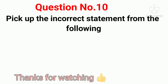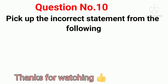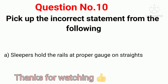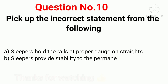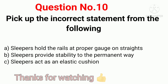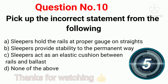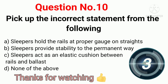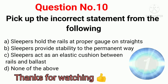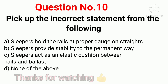Q10 (last question). Pick up the incorrect statement from the following: Option A: Sleepers hold the rail at proper gauge on stretch. Option B: Sleepers provide stability to permanent way. Option C: Sleepers act as an elastic cushion between rails and ballast. Option D: None of the above. Correct answer: Option D, None of the above. Thanks for watching.